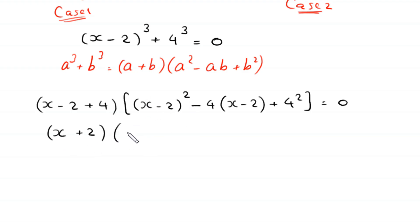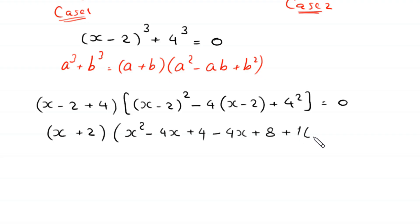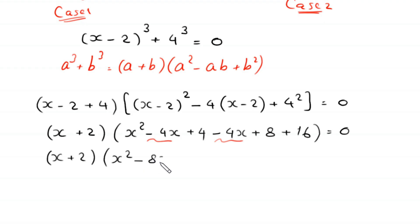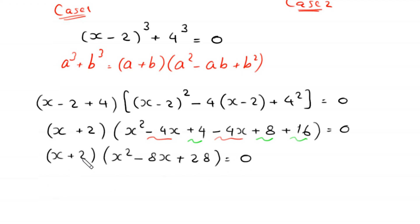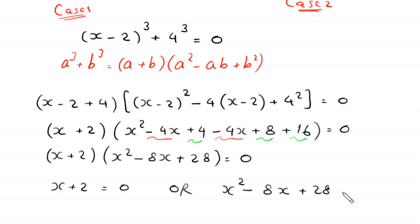Expanding: (x minus 2) squared gives x squared minus 4x plus 4, and 4 times (x minus 2) gives 4x minus 8, and 4 squared is 16. Combining terms: x squared minus 4x plus 4 minus 4x plus 8 plus 16 gives x squared minus 8x plus 28. So we have (x plus 2)(x squared minus 8x plus 28) equals 0.